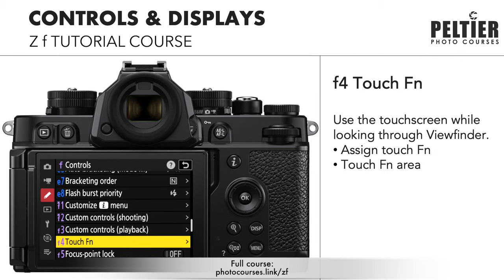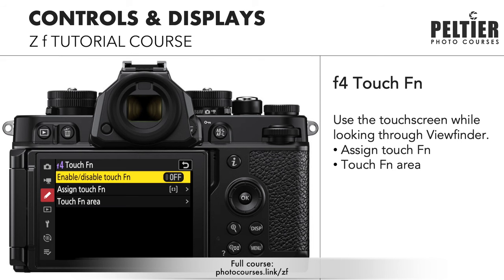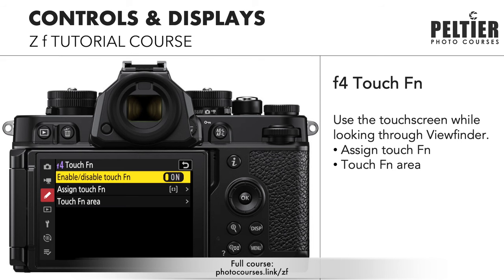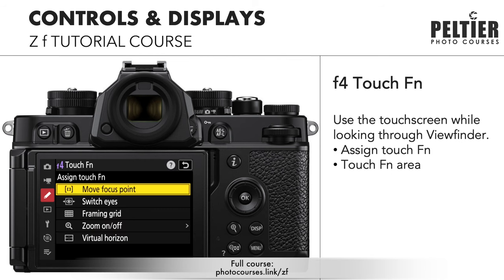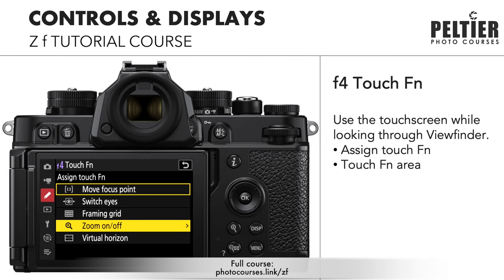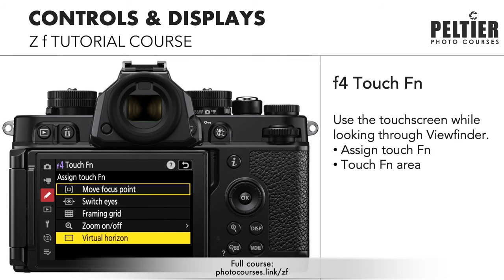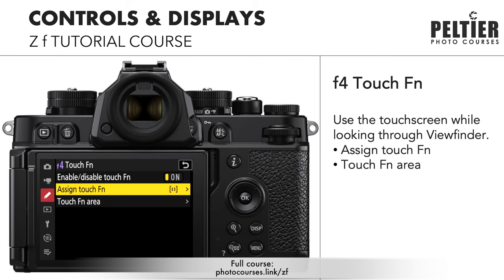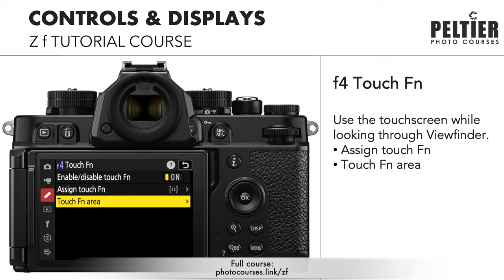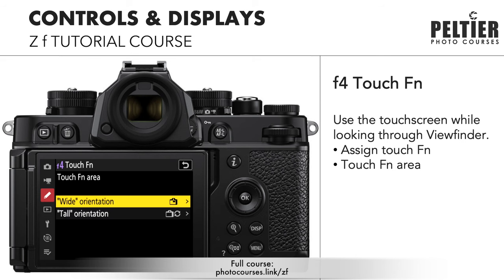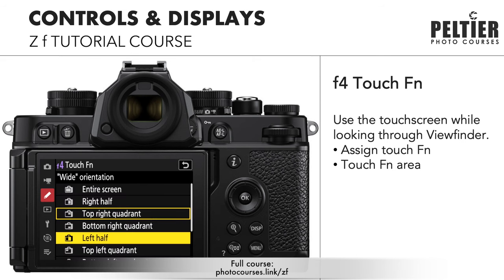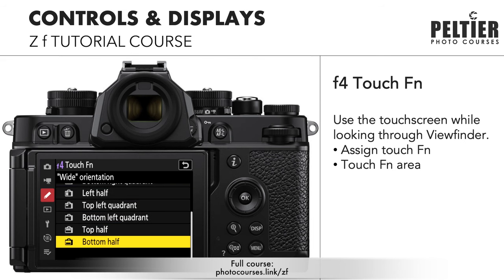You can also use the monitor touch screen as an additional control when looking through the viewfinder. That's going to be in custom settings F4, the touch fn menu. 'Assign touch fn' is where you'll choose what that touch screen does when you're looking through the viewfinder, and 'touch fn area' sets which area of the monitor is active for touch in both horizontal and vertical orientations.